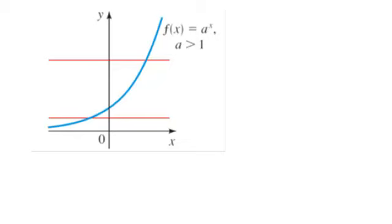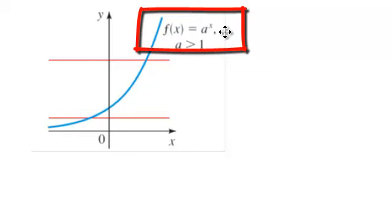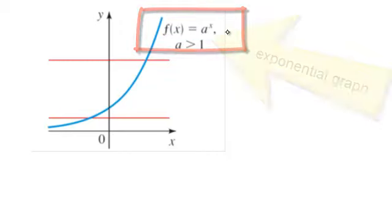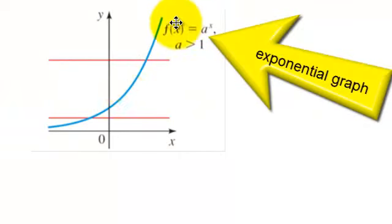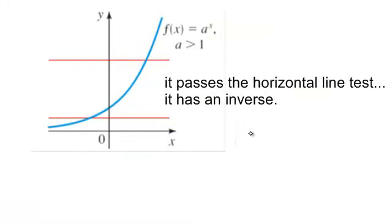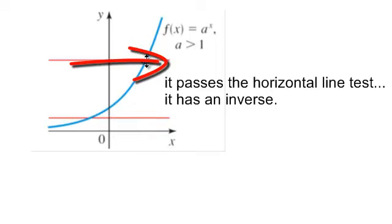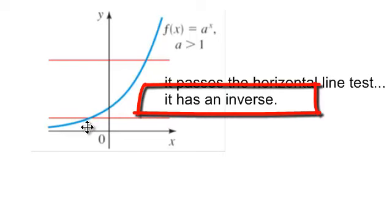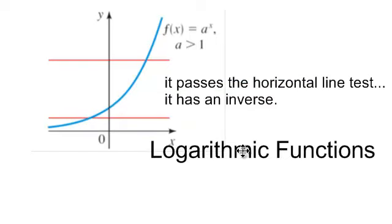We are about to learn about logarithmic functions. You will notice I have a graph of y, or f of x, equal to a to the x. This is our exponential graph from a previous lecture video. It does pass the horizontal line test — any horizontal line through it touches that line just one time. So it has an inverse, and the inverse of this exponential function is a logarithmic function.